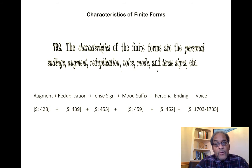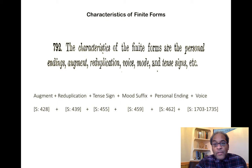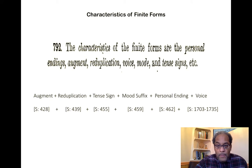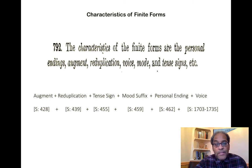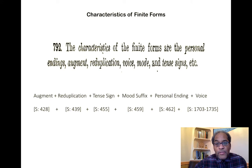The characteristics of finite forms are the personal endings, the augment in past tenses, reduplication, voice, mood, and tense signs. You can pause here and study by following up on these references to Smythe. Augment, reduplication, tense sign, mood suffix, personal ending, and voice — all these things get represented in the verb itself without any use of auxiliaries or even necessarily mentioning the personal pronoun I or we.